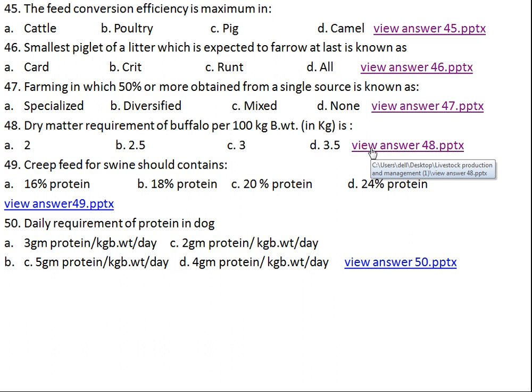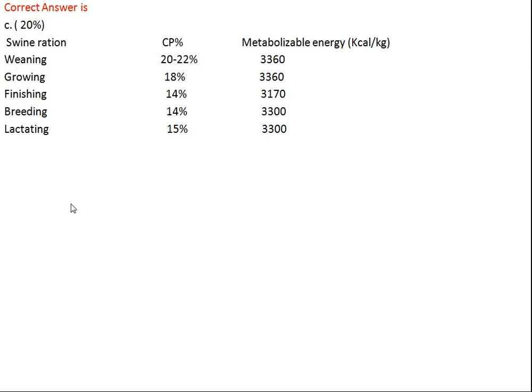Question number forty-nine: creep feed for swine should contain what percent protein? Option A: 16%, Option B: 18%, Option C: 20%, Option D: 24%. The right answer is 20% protein. Creep feed is fed to young ones at the time of weaning. Swine weaning ration includes 20–22% CP and metabolizable energy of 3360 kcal/kg. Growing pig ration: 18% CP and 3360 kcal/kg. Finishing pig: 14% CP and 3170 kcal/kg metabolizable energy. Lactating sow: 15% CP and 3300+ kcal/kg metabolizable energy.